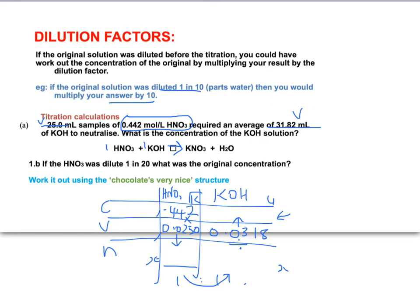So you will get your concentration, then it says if the nitric acid was diluted 1 in 20, what was the original concentration? That means that whatever that answer is, we're going to just times it by 20 to account for this dilution factor, and that's all you need to do.